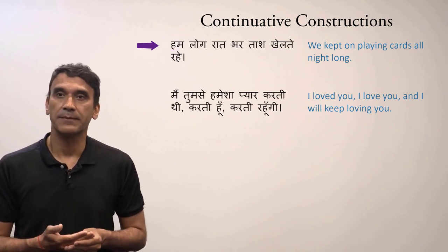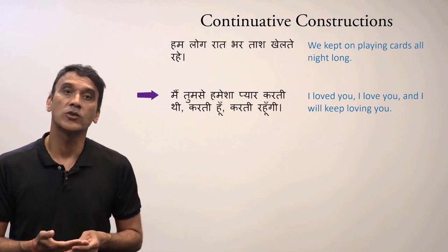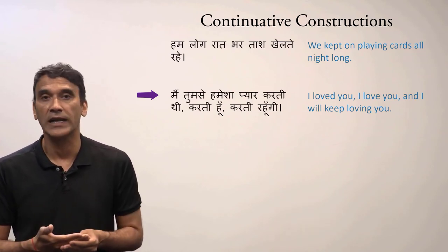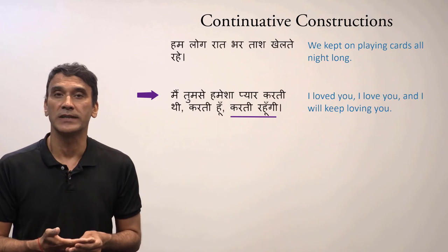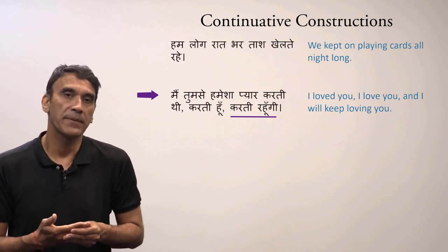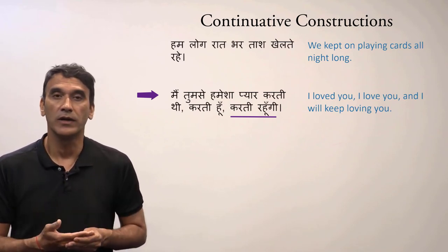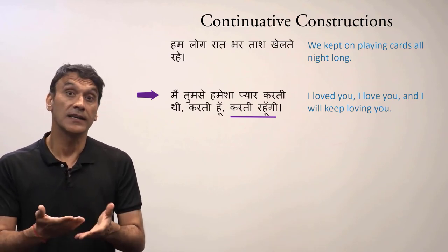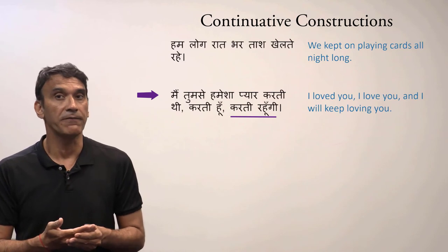Let's take another example. MAIN TUMSE HAMESHA PYAR KARTI RAHI — I loved you, I love you, and I'll keep loving you. The third part, 'I'll keep loving you,' is the continuative construction: MAIN TUMSE HAMESHA PYAR KARTI RAHI. Here the subject MAIN is feminine — a girl is saying this sentence — so we use KARTI RAHI, the feminine form.